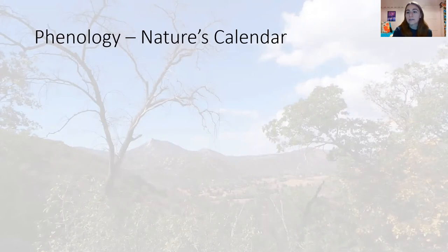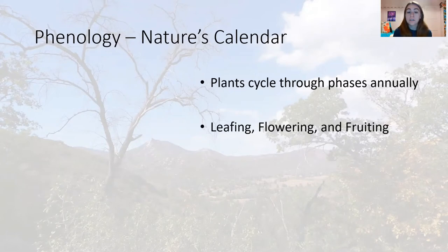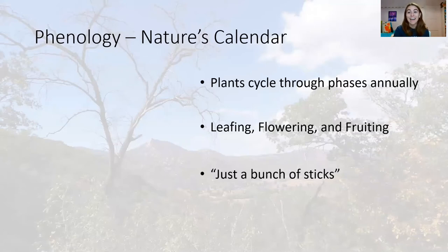If you look at a plant for a day, you're probably not getting a full picture of what this plant is. Plants cycle through phases, usually over the course of a year, and those phases are typically simplified to leafing, flowering, and fruiting. You're not usually going to have the luxury to observe this plant for an entire year. So what do you do when the leaves have fallen, the flowers have turned to fruit, and the fruits have shriveled and fallen off the tree? What do you have then? As our students always love to say, just a bunch of sticks.